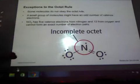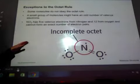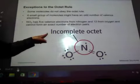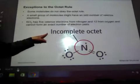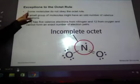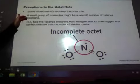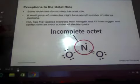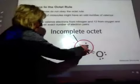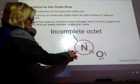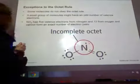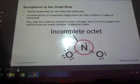Exceptions. And these are not in your vocab, but I want you to know the difference between an incomplete octet, a sub-octet, and an expanded octet. So some molecules don't obey the octet rule. An example here would be my NO2. NO2 has 5 valence electrons from nitrogen and 12 from oxygen. And there's no way that I can put this together and get 2, 4, 6. So my nitrogen only has 7 valence electrons. It does not have 8.